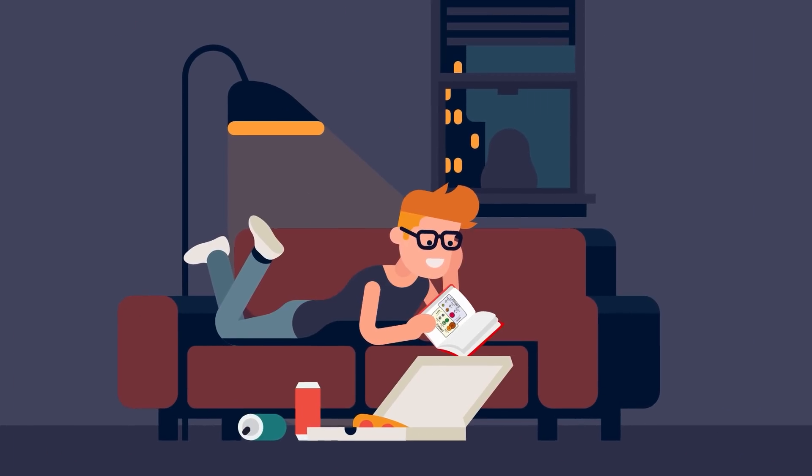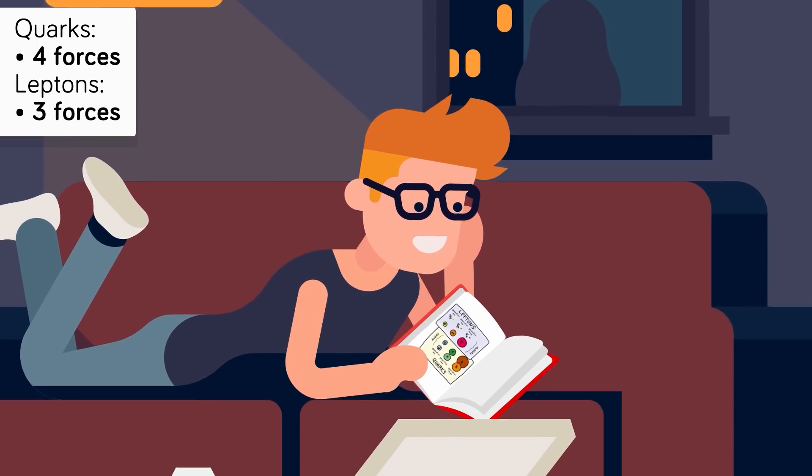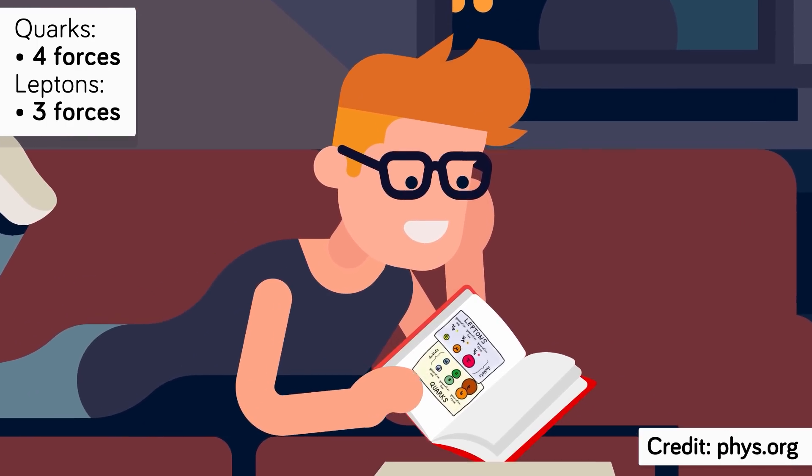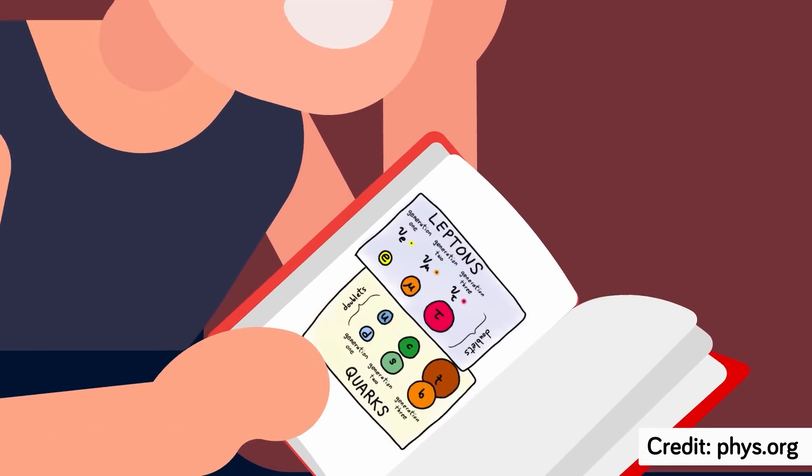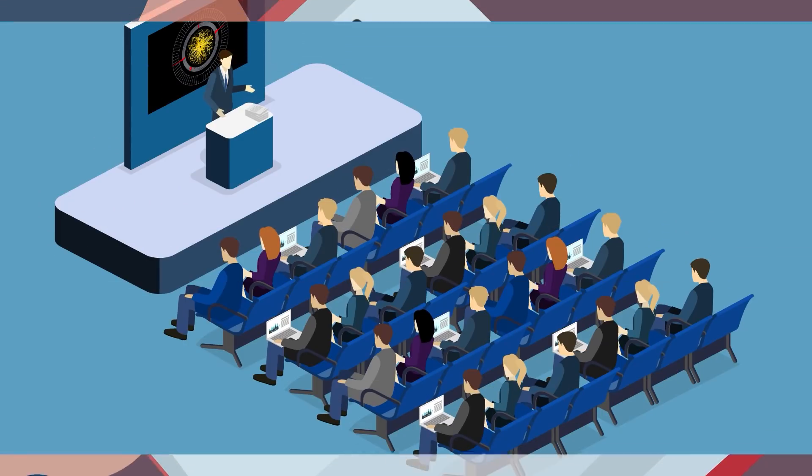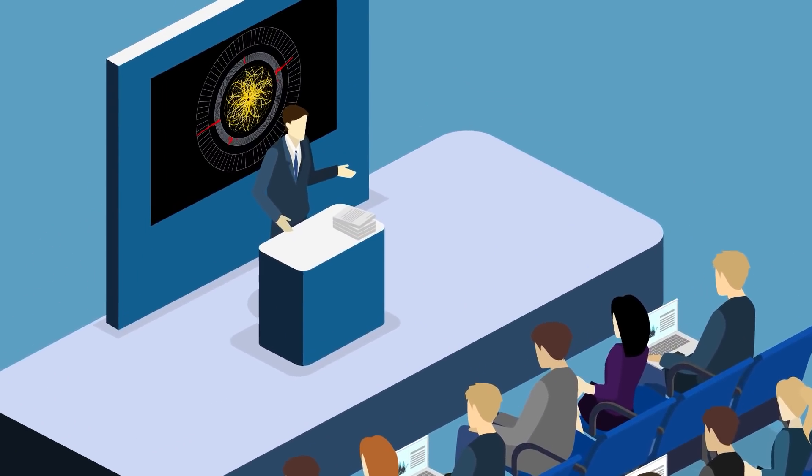You don't need to know a huge amount about these two groups, but for the purposes of distinguishing them, it's worth noting that they are subject to different fundamental forces. Quarks are subject to all four forces, but the leptons are only subject to three, having no connection to the strong force.